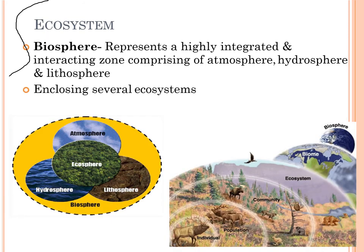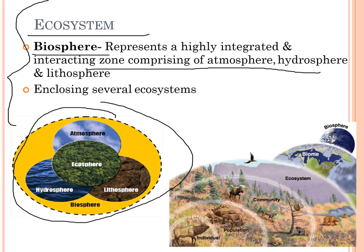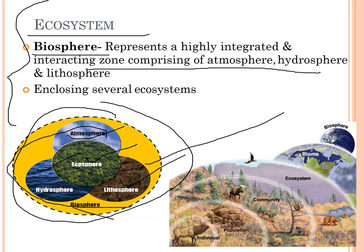The ecosystem consists of the biosphere, which represents a highly integrated and interacting zone comprising the atmosphere, hydrosphere, and lithosphere. The biosphere is a collection of many ecosystems. As shown in the diagram, the biosphere consists of the atmosphere, ecosystems, lithosphere, and hydrosphere — all under one umbrella.